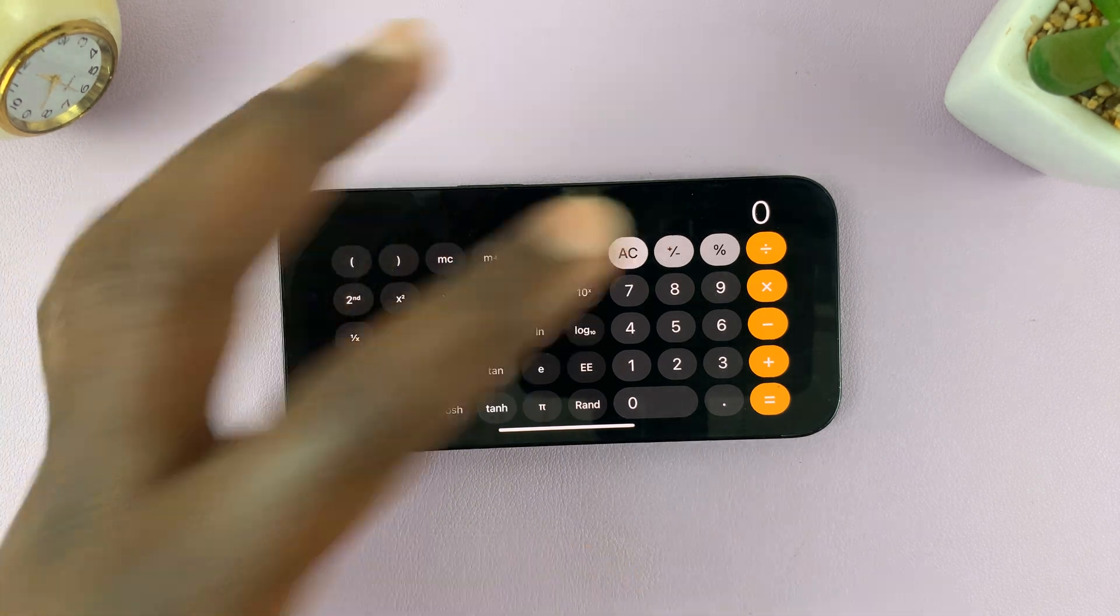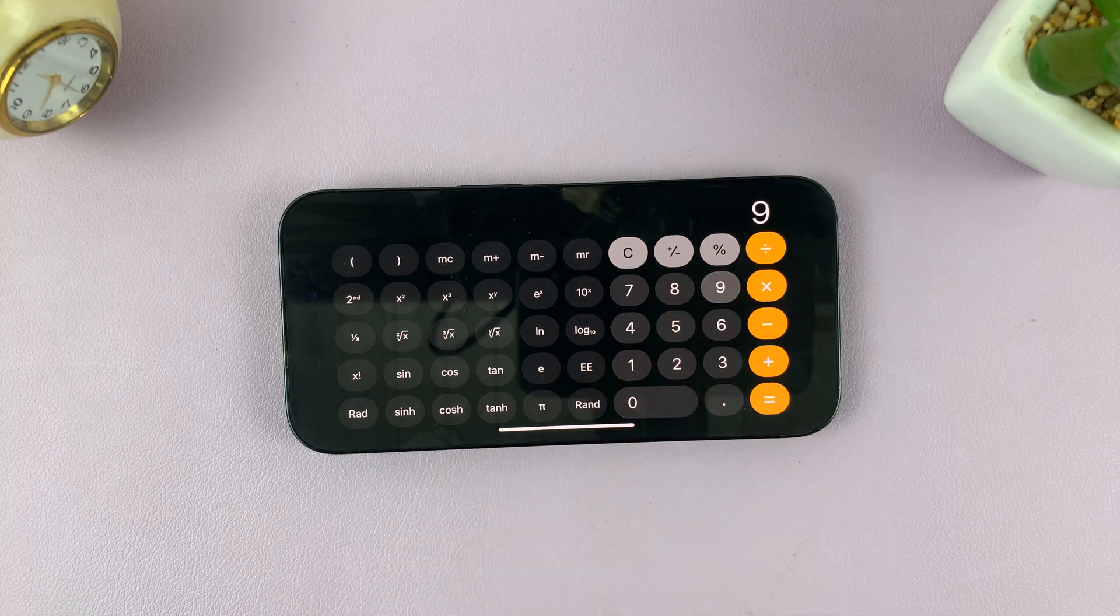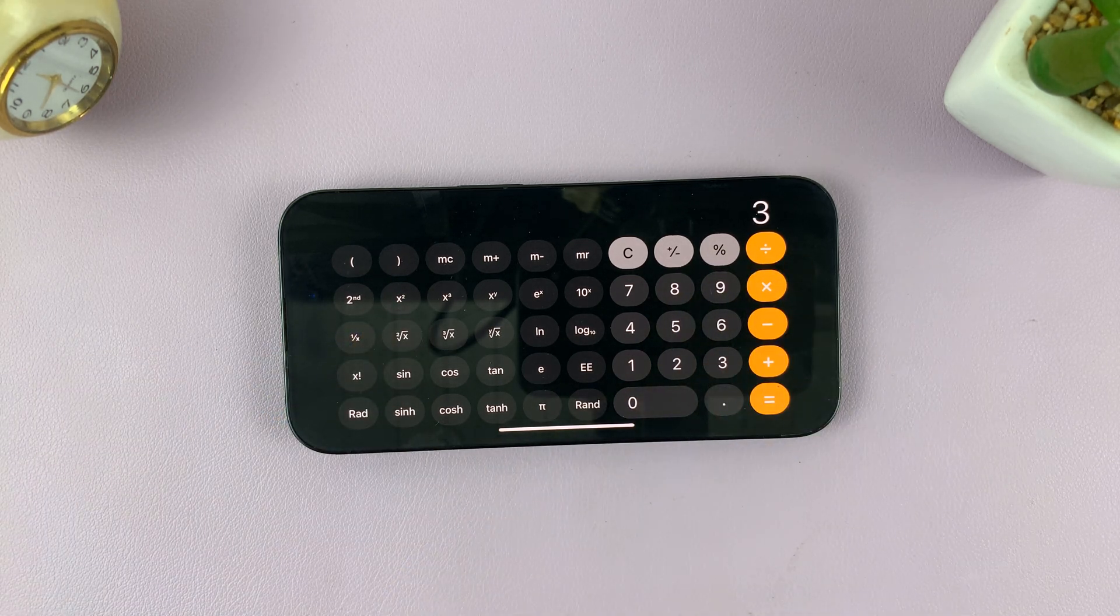Same goes for something like square root of, let's say nine. So just type nine, then hit the square root button, and then you get your answer.